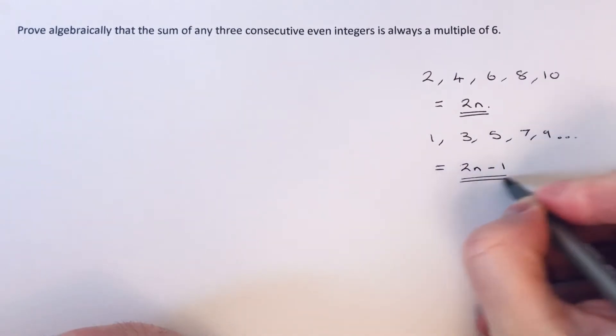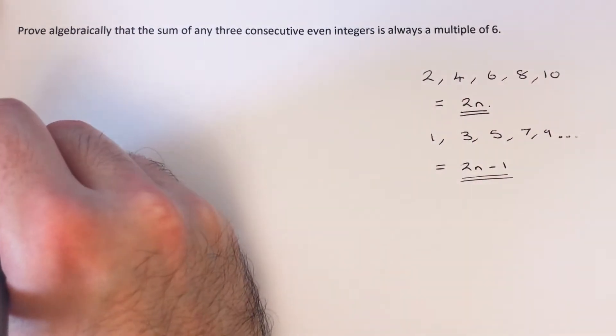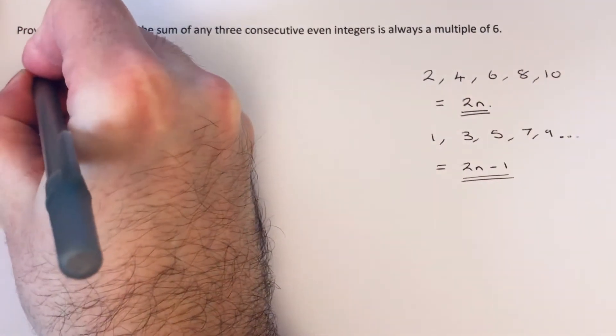You could also use 2n plus one as well. Okay, let's get on with our proof then. We've got to prove that the sum of three consecutive even integers is always a multiple of six.